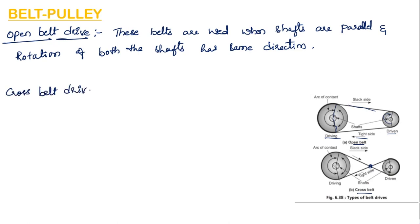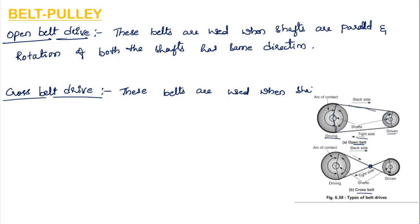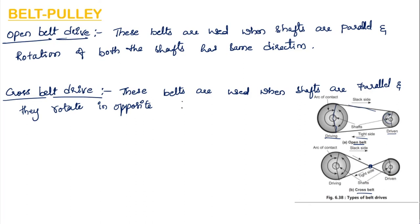Cross belt drive is used when the shafts are parallel but rotate in opposite directions. So if one shaft is rotating in the clockwise direction, the other will be rotating in the anticlockwise direction.